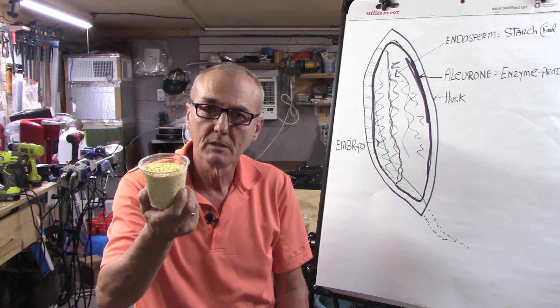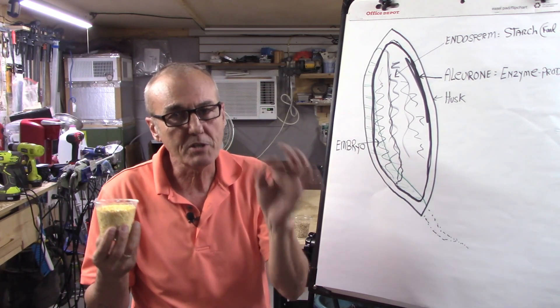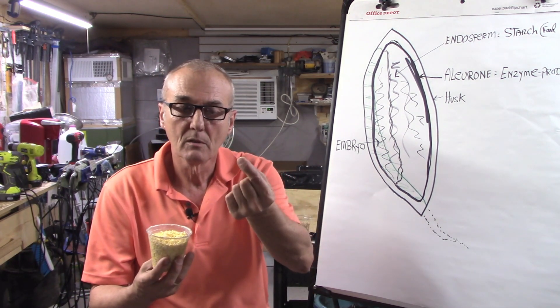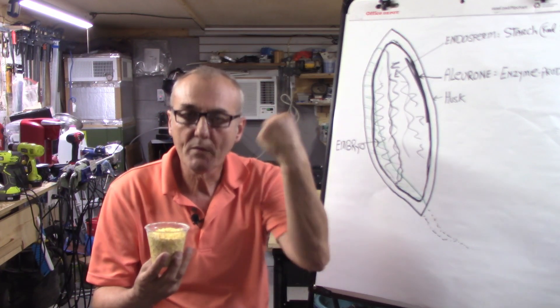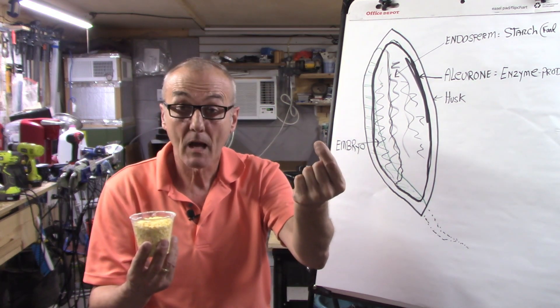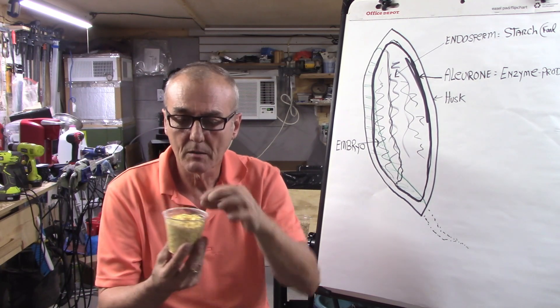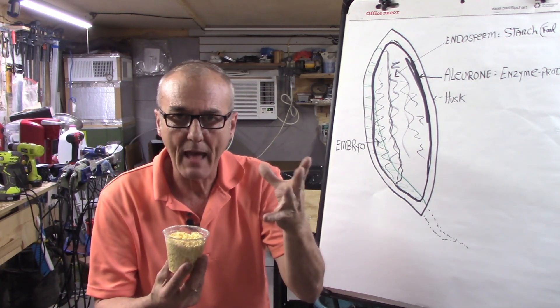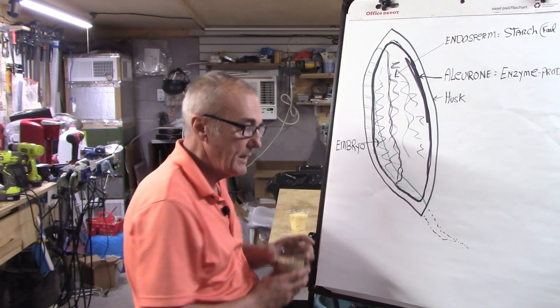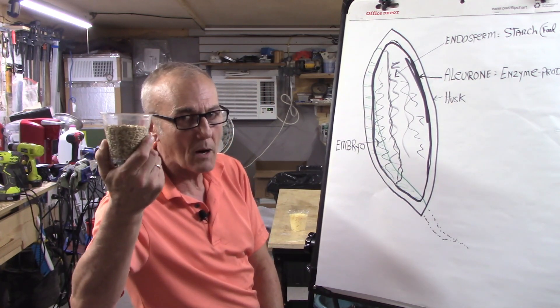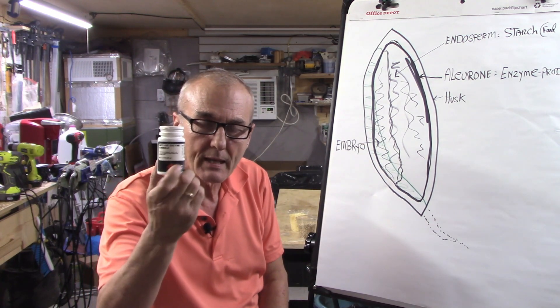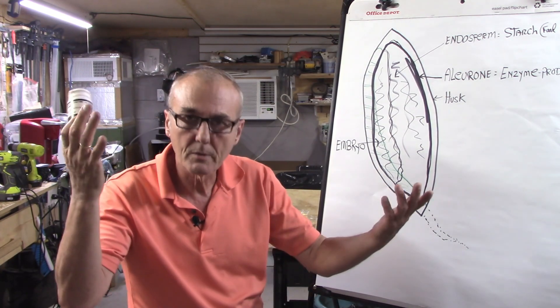So those are your three options. Let's consider flaked corn. Flaked corn, remember, has been steam-rolled, it was not germinated. So what do we have left over? You got it, we've got a flake of corn that is starch. That's what we have. There's no amylase in here, none of that. So what do we have to do? We've got to convert it. We can convert that either by adding six row barley, two row barley, or other malts, or just add some amylase enzyme. Those are your three options.